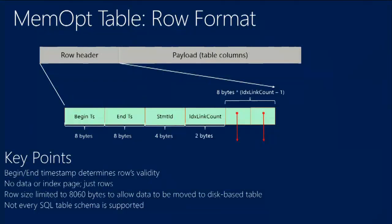A row will look a bit like this: you have a row header and a payload which is the row data — your columns — including the null bitmap and locations of variable size columns. The row header will have a begin and end timestamp, which determine when this row is going to be visible. For example, if it's between 100 and 200, every transaction with a timestamp between those two times can access this row. We also have a statement ID and a number of index links.